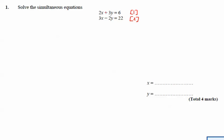What I'm looking to do is multiply this equation here by 3 so that I get 6x, and this one here by 2 so I get 6x. I'm going to take equation 1 and multiply it by 3.